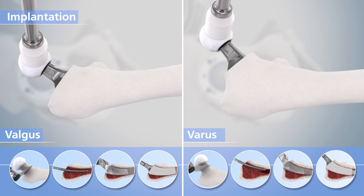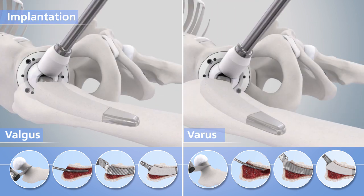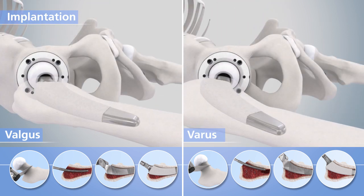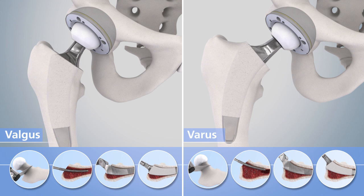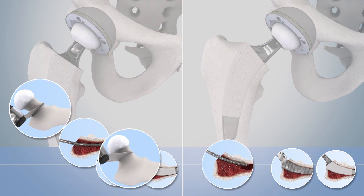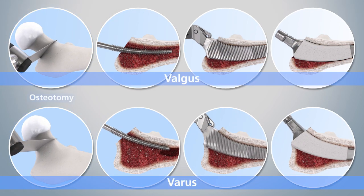The result shows precise reconstruction of the anatomical conditions such as the CCD angle and femoral offset along with reliable primary stability. By observing all the steps described, individualized implantation is reliably possible in a wide range of differing anatomies.